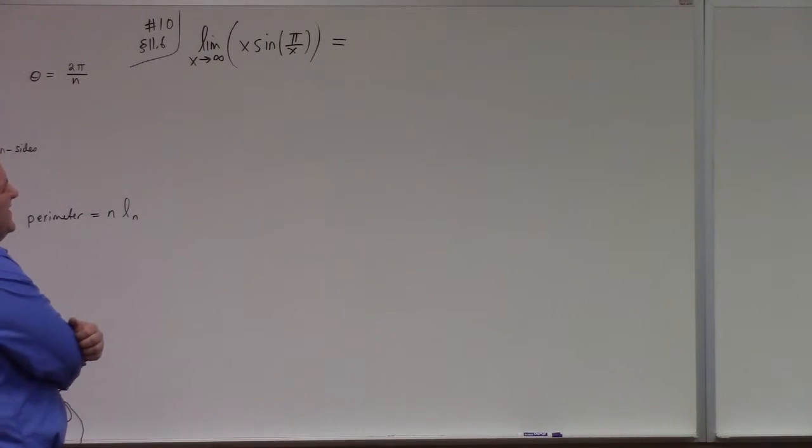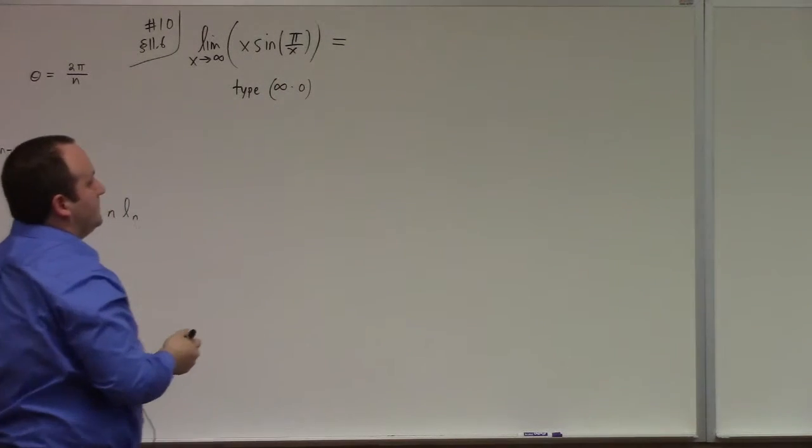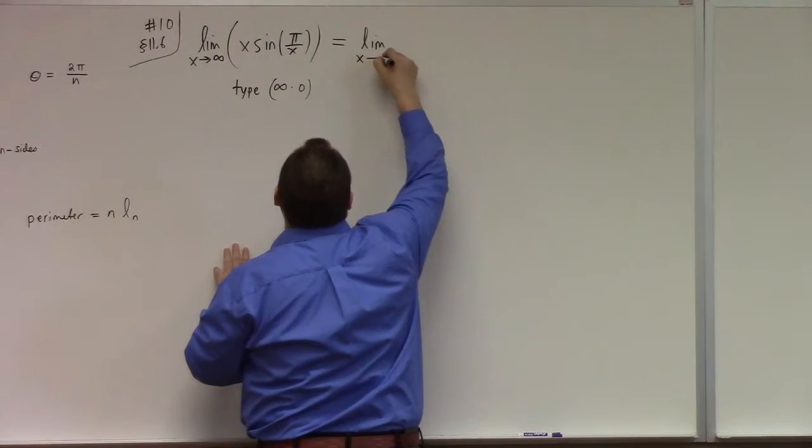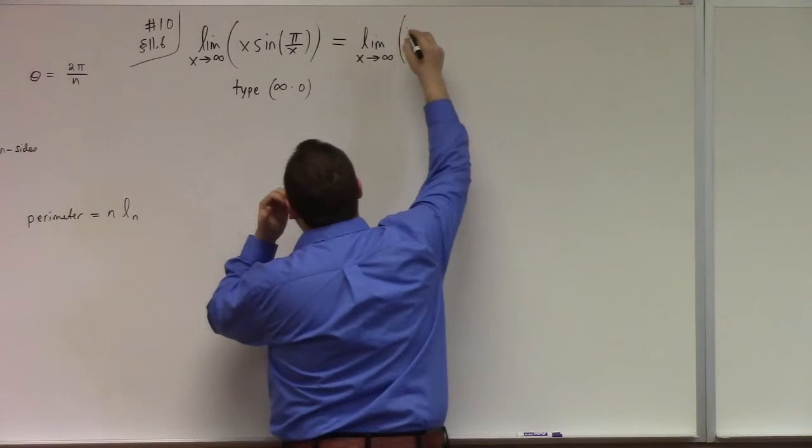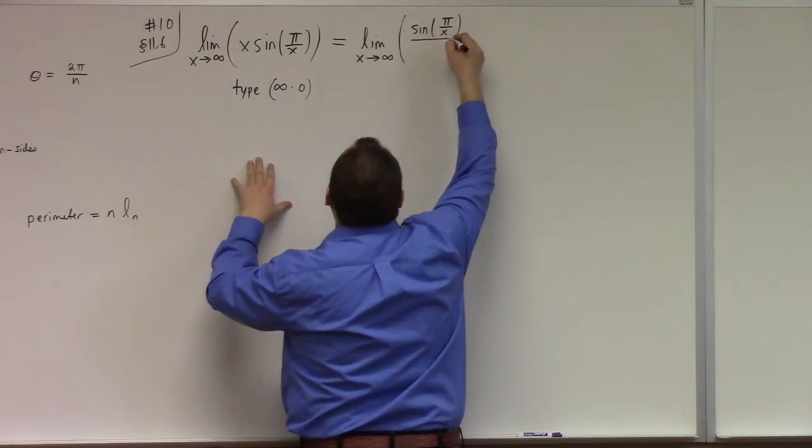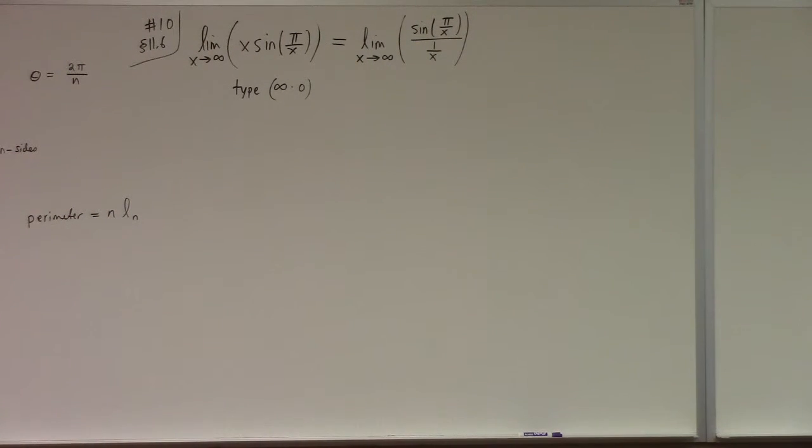What's the trouble here? As x goes to infinity, pi over x goes to what? Zero, right? So we've got sine of zero which is zero. So x goes to infinity. So this is type infinity times zero, right? So that means it's indeterminate. What we're going to do here is to rewrite it by putting the x downstairs. Because reciprocating sine doesn't really do anything nice for me.